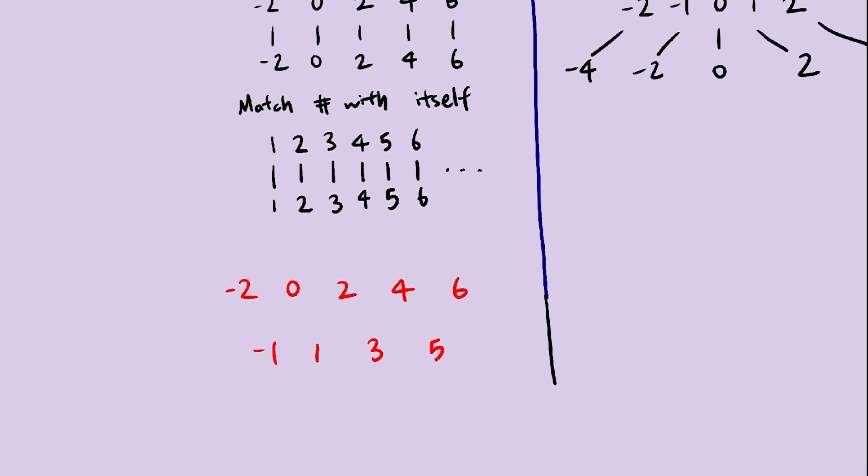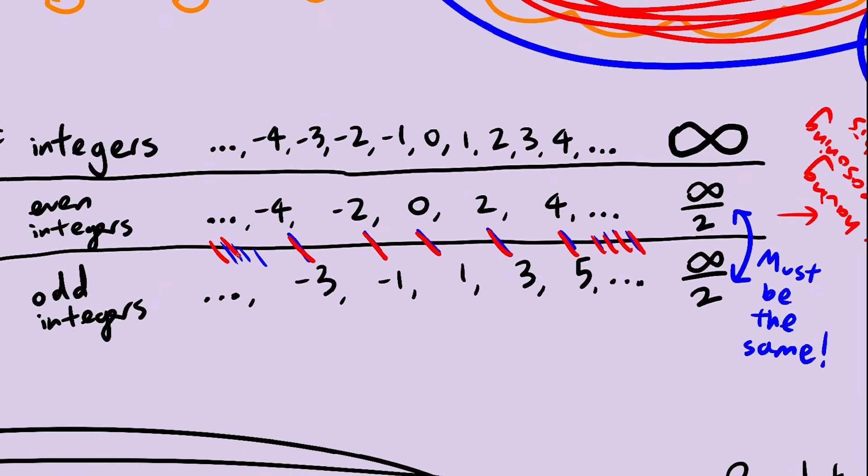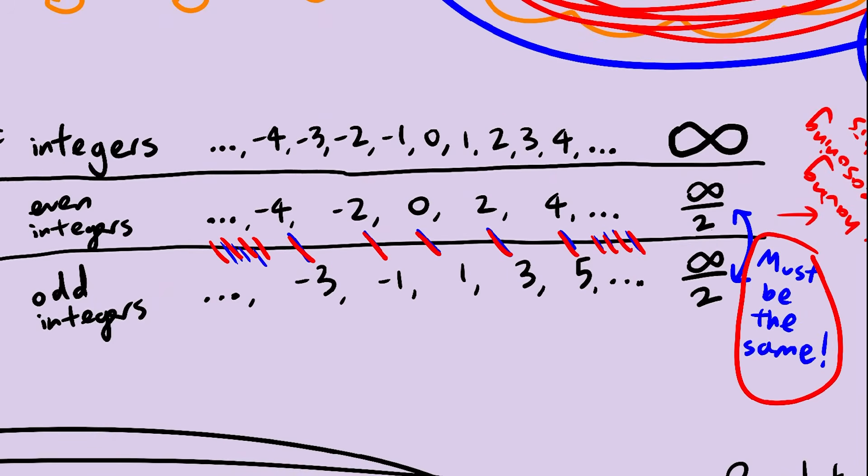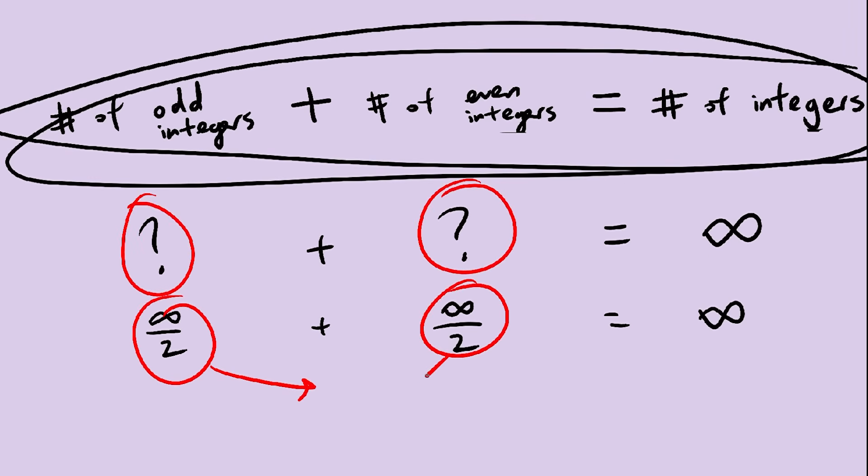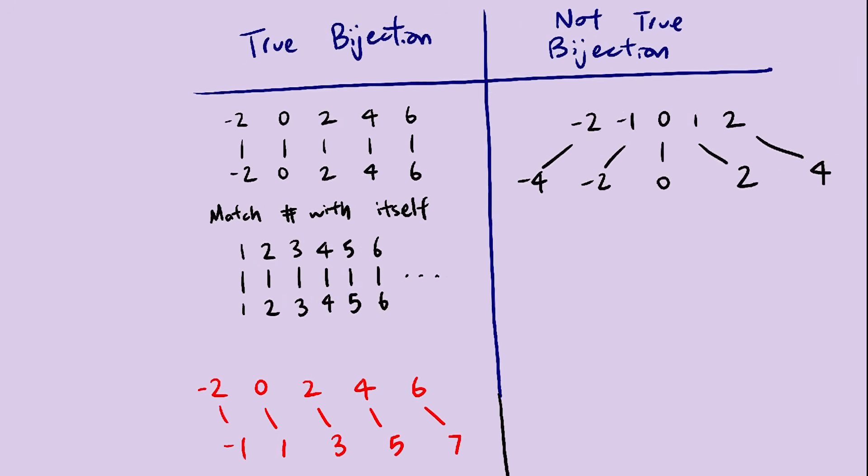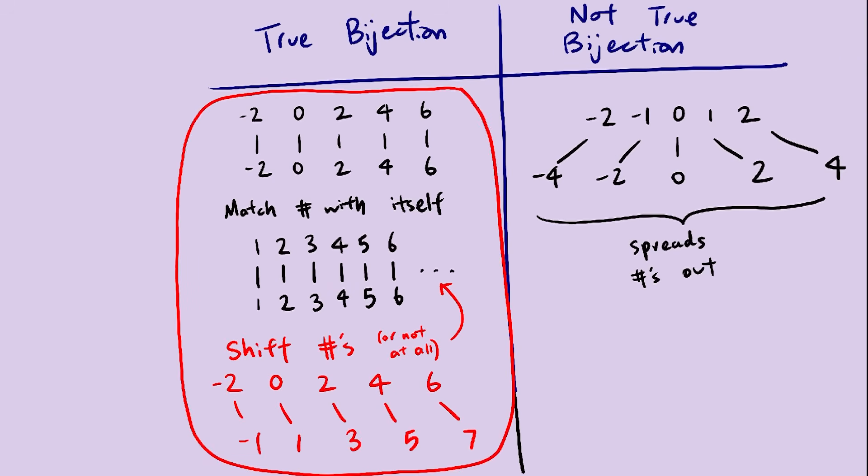And we know that this must be a true bijection, because we used this to find out that there were the same amount of even and odd numbers. And without knowing that, it's impossible to find how many even numbers there are. Okay, we have ourselves a start here.